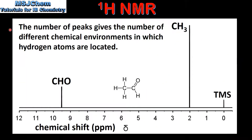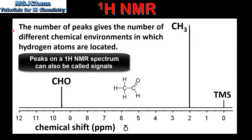We'll start by looking at an NMR spectrum. The number of peaks on the spectrum gives the number of different chemical environments in which hydrogen atoms are located. On this spectrum, which is for ethanol, we can see we have one peak at around 9.5 ppm, one peak at around 2 ppm, and one peak at 0 ppm.